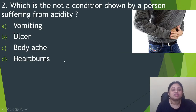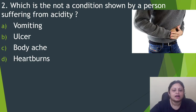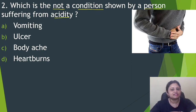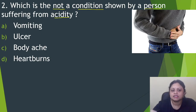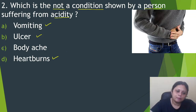Next question: which of the following is NOT a condition shown by a person suffering from acidity? Option A, vomiting. B, ulcer. C, body ache. D, heartburns. Excess secretion of acid in the stomach causes acidity. If acidity occurs, then vomiting occurs, ulcers may also occur, and heartburns also occur. But the thing which is not a symptom of acidity is body ache. So the correct answer is option C, body ache.